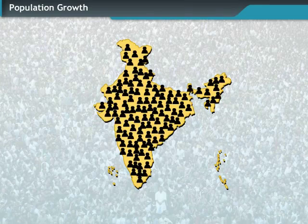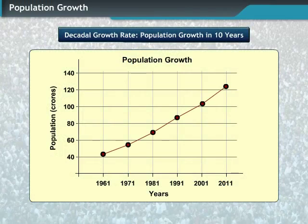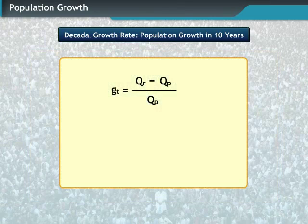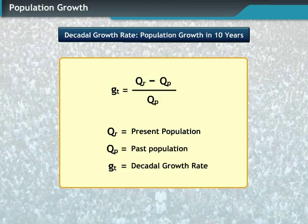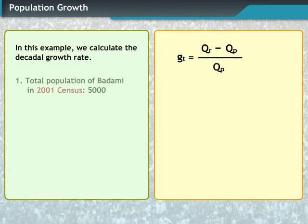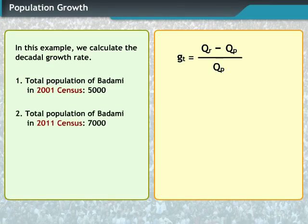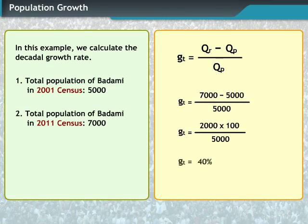In India, a population census is done every 10 years. The population growth in 10 years is called decadal population growth. The growth rate of a population is calculated using the given formula, where QR represents the present population and QP represents the past population. For example, the total population of Badami village in the 2001 census was 5,000 and in 2011 was 7,000, giving a decadal growth rate of 40%.